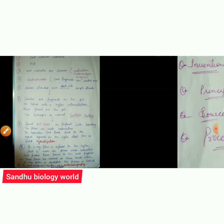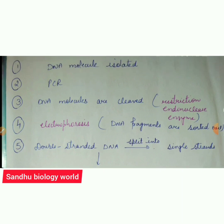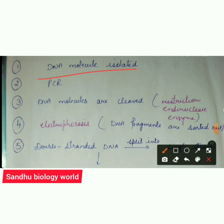The procedure is very very important. I have made a simple chart so students can easily understand DNA fingerprinting. Note this chart in your notebook so you can learn it for exams. The first step is that you must have a DNA molecule — DNA isolated from the individual you want to identify. The second step is PCR — Polymerase Chain Reaction, which you have studied in the biotechnology chapter.